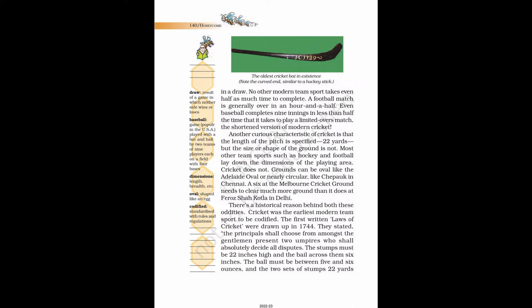Grounds can be oval like the Adelaide Oval or nearly circular, like Chepauk in Chennai. A six at the Melbourne Cricket Ground needs to clear much more ground than it does at Feroz Shah Kotla in Delhi. There's a historical reason behind both these oddities. Cricket was the earliest modern team sport to be codified. The first written laws of cricket were drawn up in 1744. They stated: the principals shall choose from amongst the gentlemen present two umpires who shall absolutely decide all disputes. The stumps must be 22 inches high and the bail across them 6 inches. The ball must be between 5 and 6 ounces, and the two sets of stumps 22 yards apart.